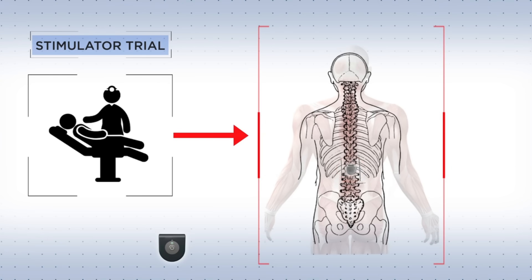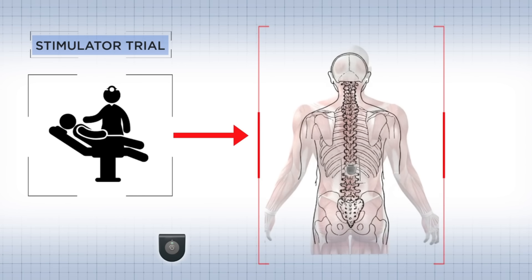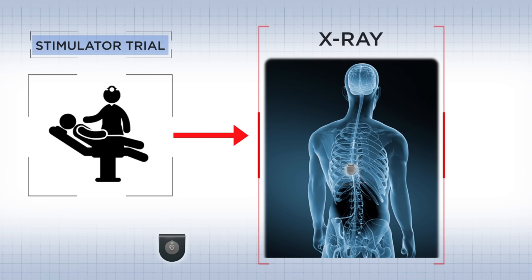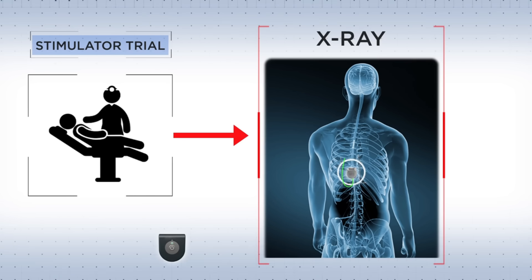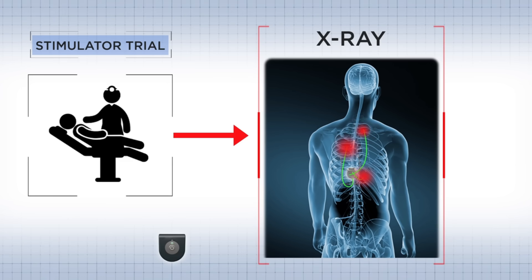you can set an implant date. For the actual procedure, the doctor uses skill and X-ray guidance to position a lead wire at the pain source. The lead is threaded down the spine in the epidural space outside the spinal cord.